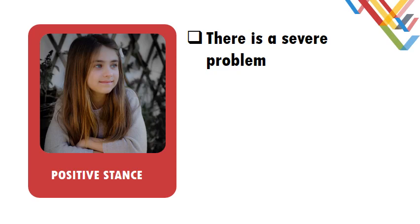Let's begin with the positive team. If you are on the positive or government side, you have the so-called burden of proof — the things you have to prove to the adjudicators. As the government side, you need to assure and prove that there is a severe problem. Whatever the motion is, you first need to identify that there is a problem, and explain why it is important to debate it.